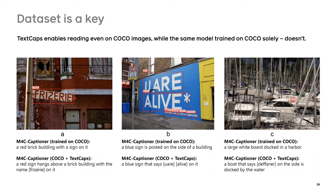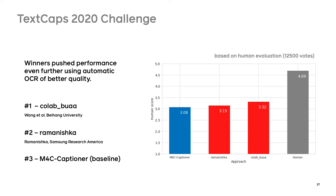Apart from experimenting on our dataset, using TextCaps also allows us to improve reading abilities on data from other datasets, such as COCO Captions. Even when we use the same M4C model with reading capabilities, it doesn't read the text in the images when trained solely on COCO data. We also organized a public challenge on the TextCaps dataset. The winner team improved the performance of the M4C model even further by using automatically extracted OCR tokens of better quality, showing performance gains in metrics as well as human scores.